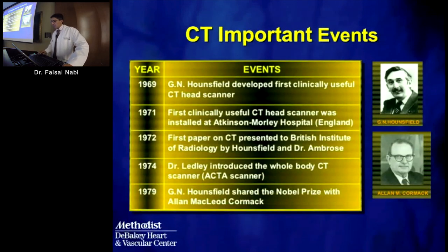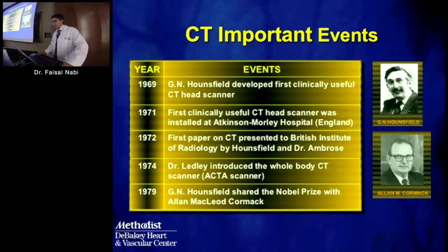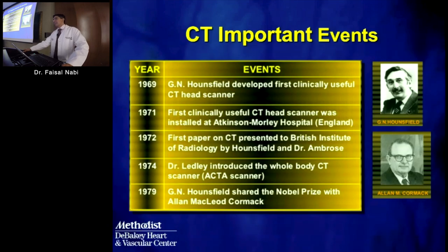Key historical names to know are Hounsfield and Cormack, who won the Nobel Prize for the development of CT. Similar to MRI, this work was done in the 1970s, so this is not old technology—it's relatively recent. There are two different types of CT machines: the more familiar single source CT, with one x-ray tube and one set of detector arrays, and dual source CT with two detector heads at 90 degrees to each other.